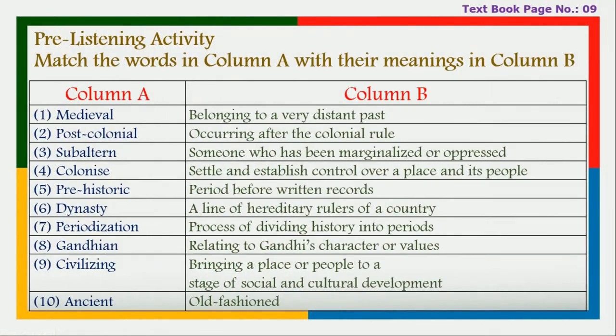In the first unit, the syllabus covers listening, speaking, reading, writing, and vocabulary tasks. Answer for textbook page number 9, pre-listening activity: match the words in column A with their meanings in column B. First, 'medieval' means belonging to a very distant past. Second, 'post-colonial' means occurring after the colonial rule. Third, 'subaltern' means someone who has been marginalized or oppressed. Fourth, 'colonize' means to settle and establish control over a place and its people.